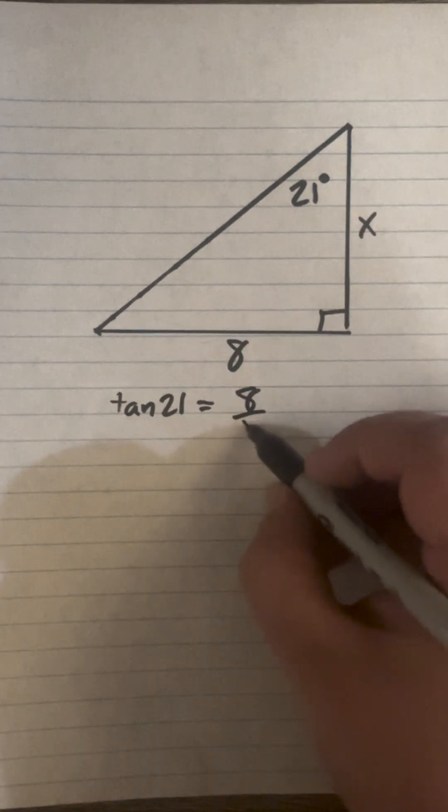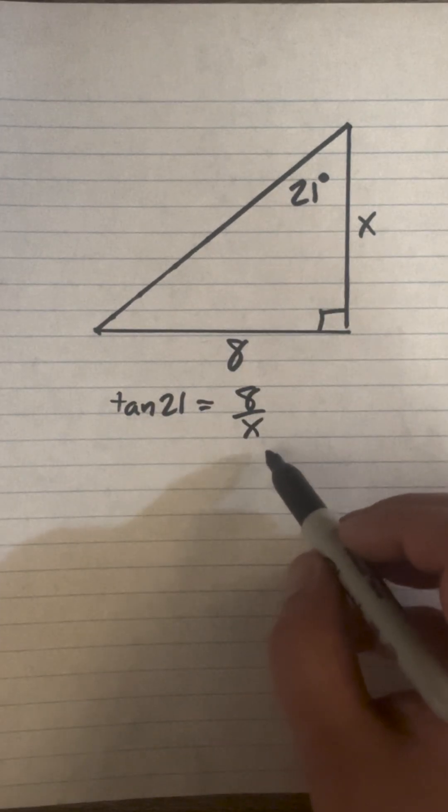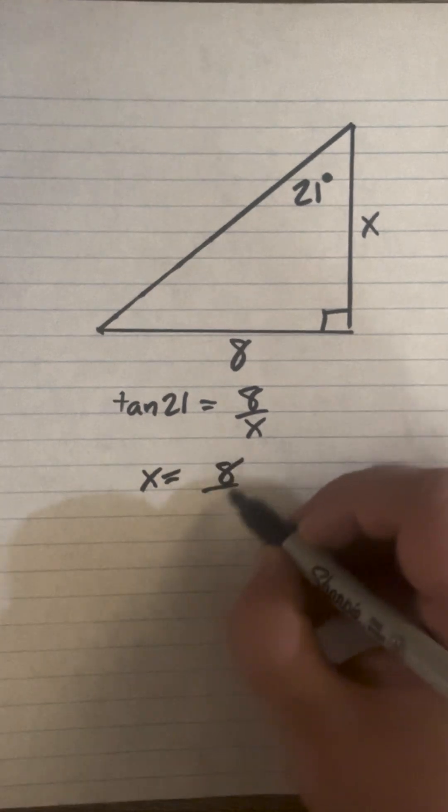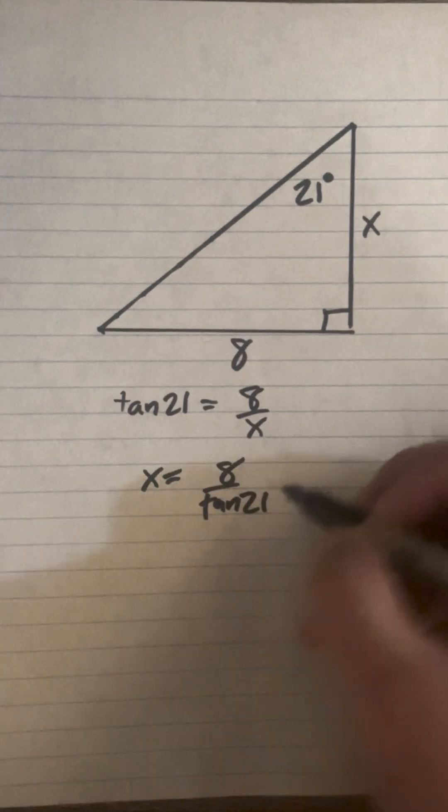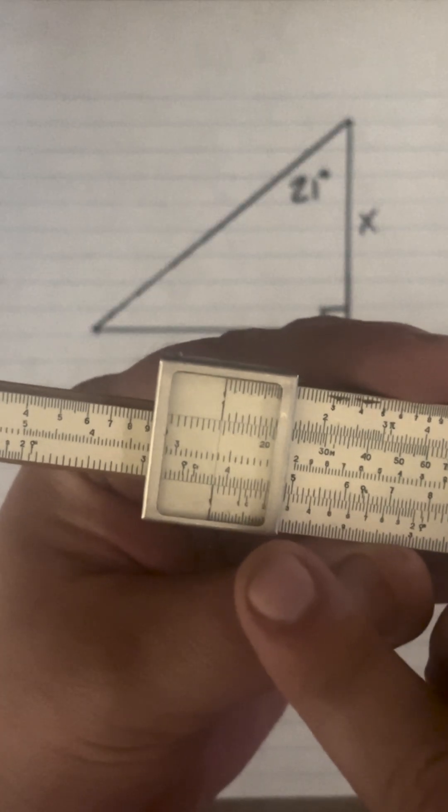We can switch this over because x is on the bottom, so x is by itself: 8 over tangent of 21. We know tangent of 21 is 3.8, so if we slide down to our numerator on the D scale, that's going to be 8.